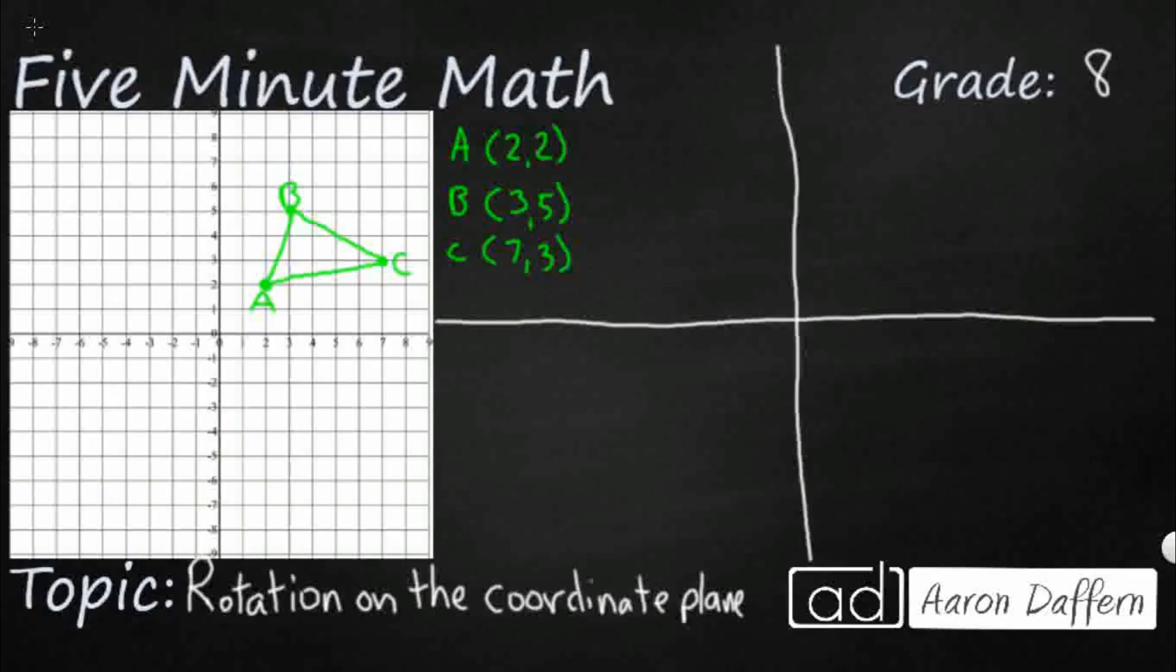So let's say we are starting with a random triangle in quadrant 1. You see the points labeled there ABC, and there's a few different rotations we can make.